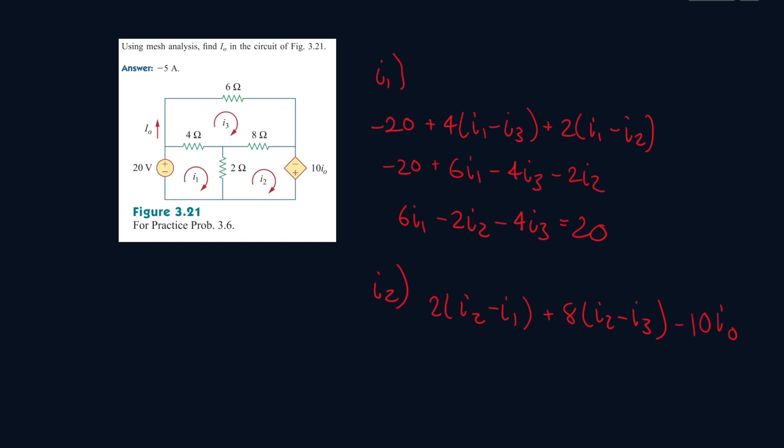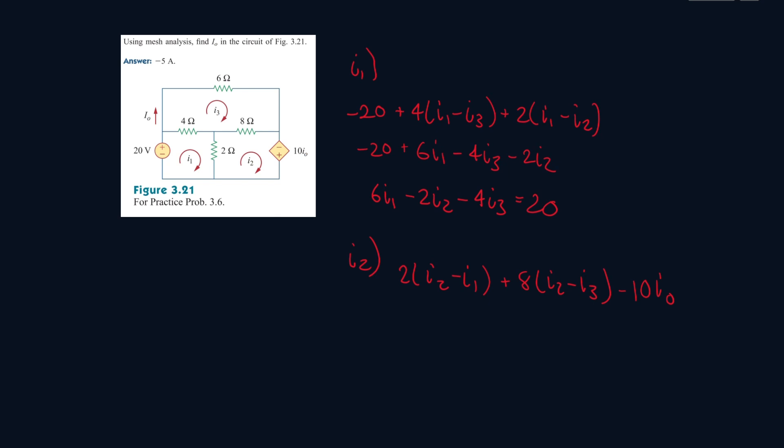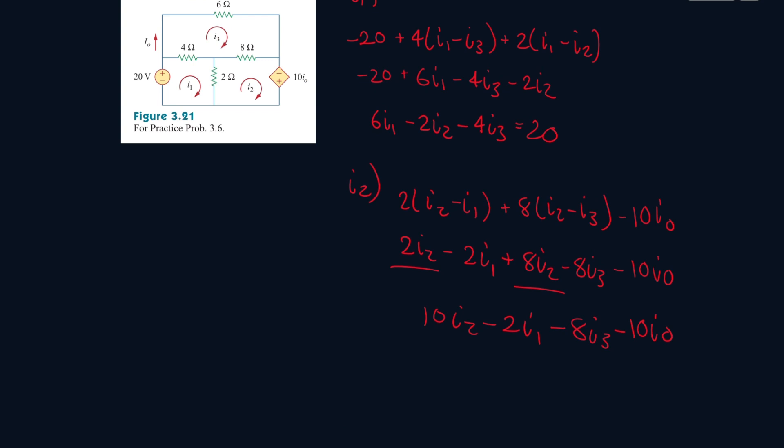Because it's entering from the negative side of this dependent voltage source. So now let's simplify all of this. So 2I2 minus 2I1 plus 8I2 minus 8I3 minus 10IO, collecting like terms.